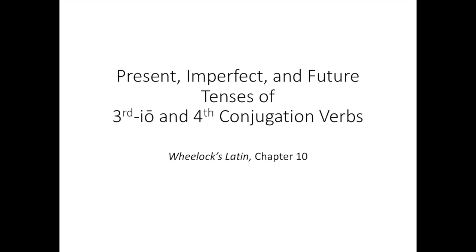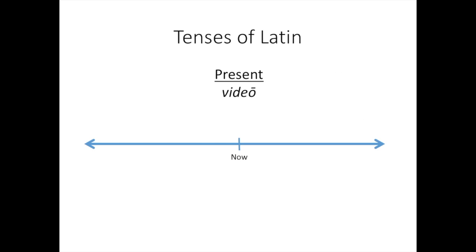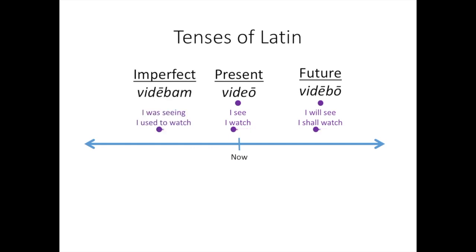Altogether these are the present system of tenses. So we already know these tenses. The present tense is something that can happen one time, like I see, or an ongoing action: I watch or I am seeing. The future can be a one time thing or an ongoing thing: I will see or I shall watch. And the imperfect is only an ongoing action: I was seeing or I used to watch.